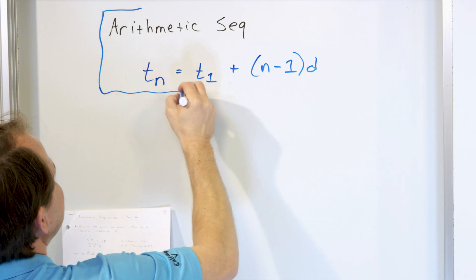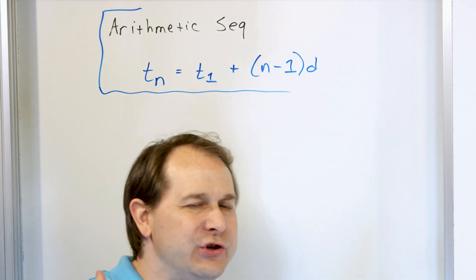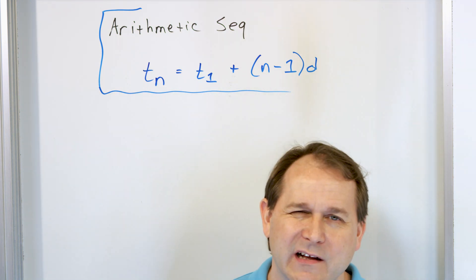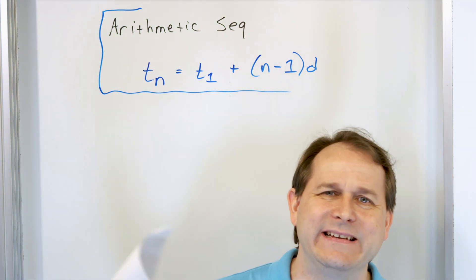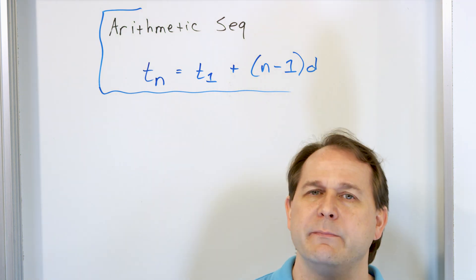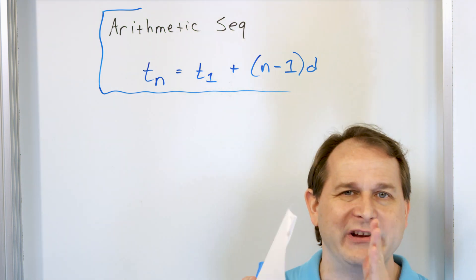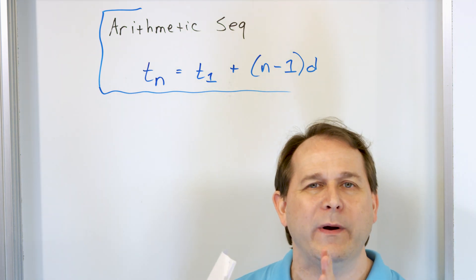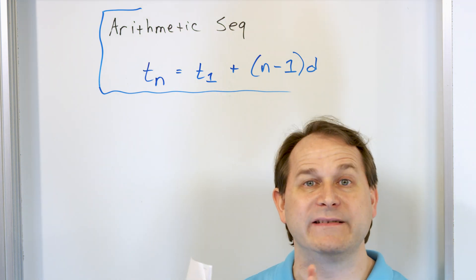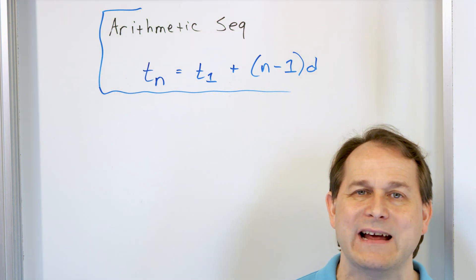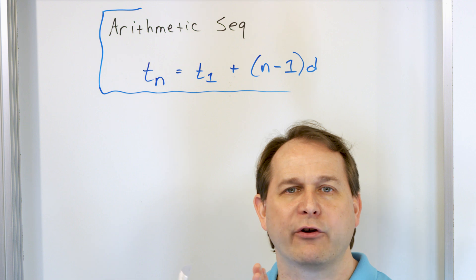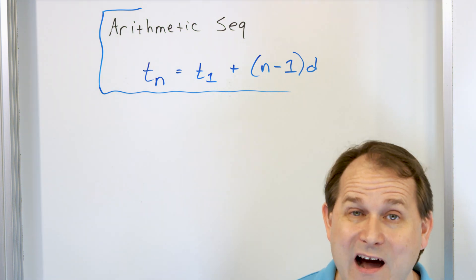We want you to understand exactly why this equation is the equation for the arithmetic sequence and why it makes total sense. It isn't always clear. For instance, why is it n minus 1 in there? Why are we adding T1 to the front? Remember, the concept of an arithmetic sequence means it's a listing of numbers where each pair of adjacent terms always differ by what we call a common difference — some constant number. Whatever that difference is, it has to be the same for every term in the sequence. Otherwise, it's not arithmetic.